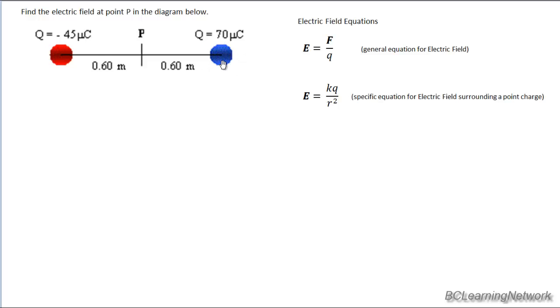The charge on the right has a deficit of electrons, it's missing electrons, and therefore it is net positive, and its value is 70 microcoulombs. The charge on the left has an excess of electrons, and its charge is minus 45 microcoulombs. And we're trying to find the strength of the electric field right in the middle.